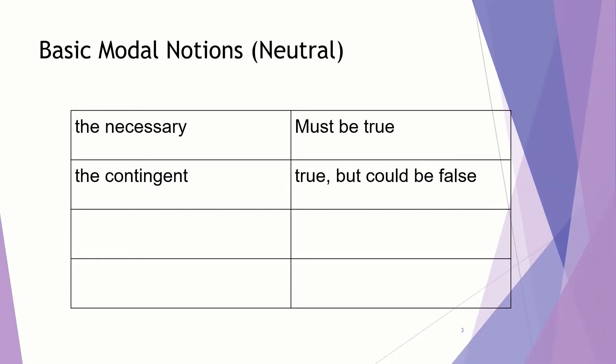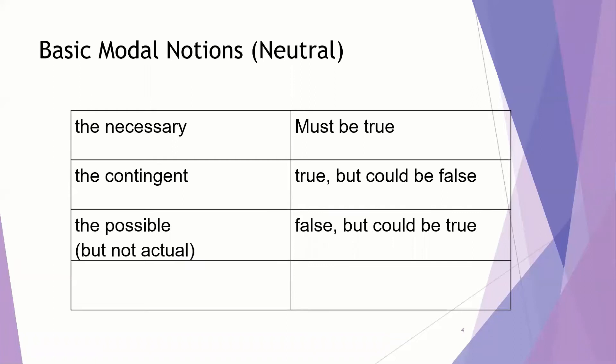The contingent, on the other hand, is true, but could be false. We also have these modal notions of possibility. Something that is possible but not actual is false, but could be true, and then there are things that are impossible in any sense, and these are things that cannot possibly be true.